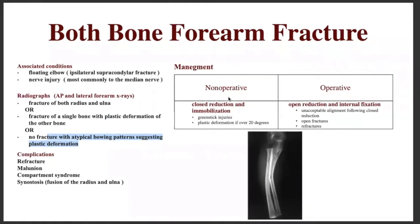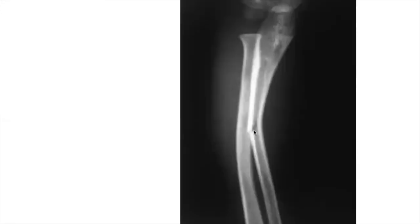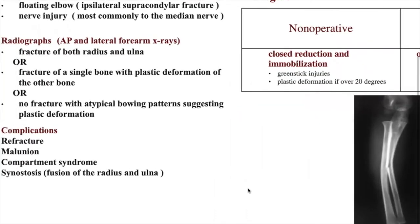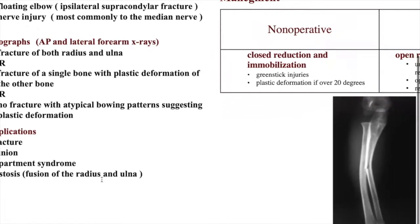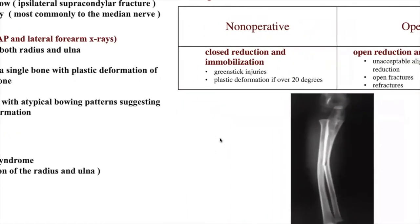Management is either non-operative — closed reduction and immobilization — or operative — open reduction and internal fixation. Closed reduction and immobilization is for patients with greenstick injuries and plastic deformations, while open reduction is for open fractures, refractures, or unacceptable alignment following closed reduction. Possible complications include refractures, malunion, compartment syndrome, and synostosis — an abnormal fusion between the two bones such as the radius and ulna.